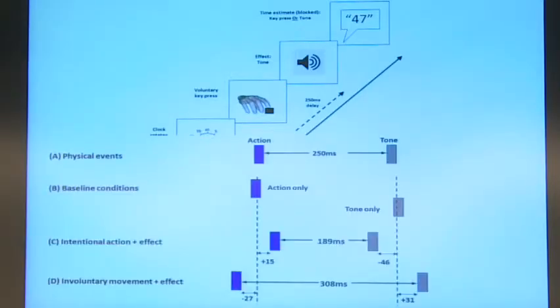And under normal circumstances, this is reality, so the actual events are occurring 250 milliseconds apart. If there's just an action with no tone, you're very good at estimating when you pressed the key. If there's just a tone with no action, you're very good at estimating when the tone occurred. But if your action produces the tone, then you tend to estimate the action as being later and the tone as being earlier. This is called binding, temporal binding of action-outcome relationship. So you compress things in time.